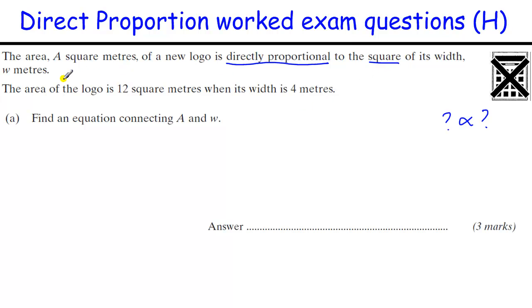In this question, the area is proportional to the square of the width, and we're told if the area is 12, the width is 4. We've got to find a connection between two equations. So the area A is proportional to the square of the width, or the width squared. Most of the problems with these straightforward proportional questions are people forgetting to put the power on the second variable.